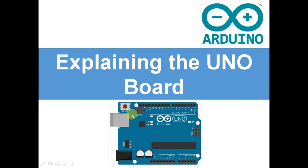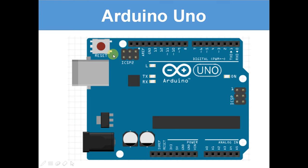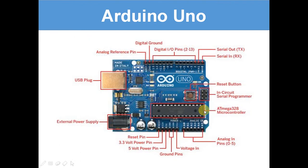Let's have a look at the UNO board. It's got the digital pins, the power, and the analog. Looking at the diagram, you've got the power bit, the analog, and the digital. The power pins are constantly sending out a flow of electricity — unlike the digital pins where you can control whether you send out electricity or not. This pin is constantly sending out 5 volts, this one 3.3 volts, and these are constantly sending out ground.